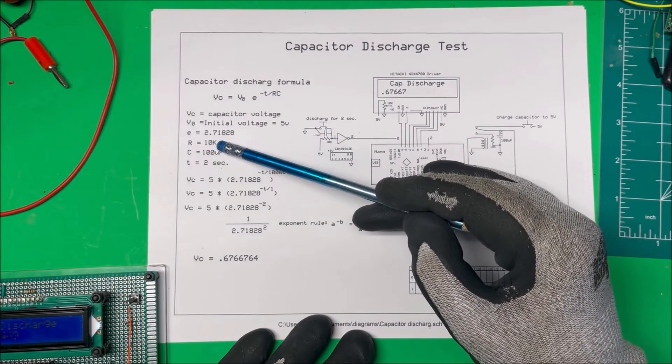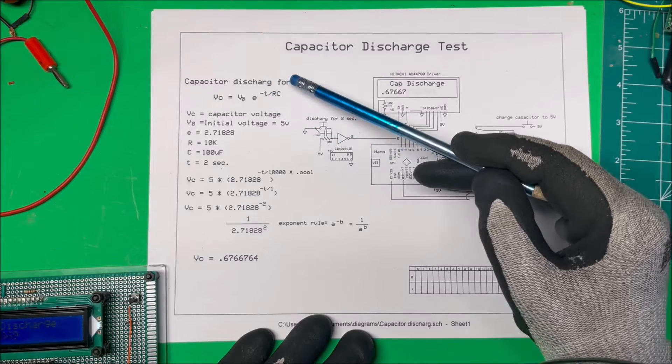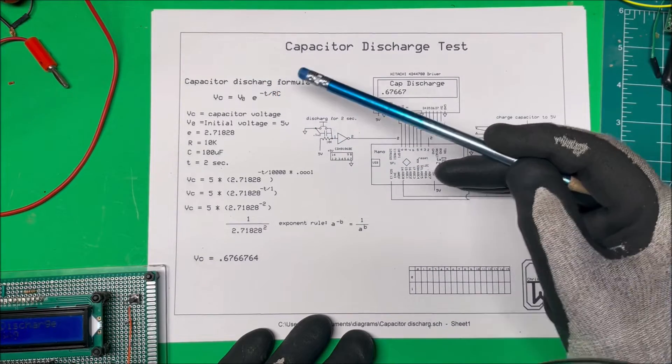And then E, that's Euler's number, 2.71828. And then minus T, that's our time divided by our RC time constant here.